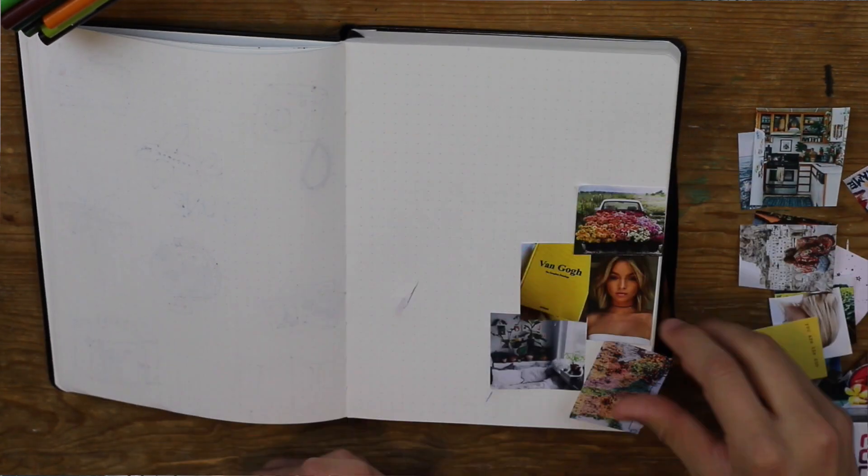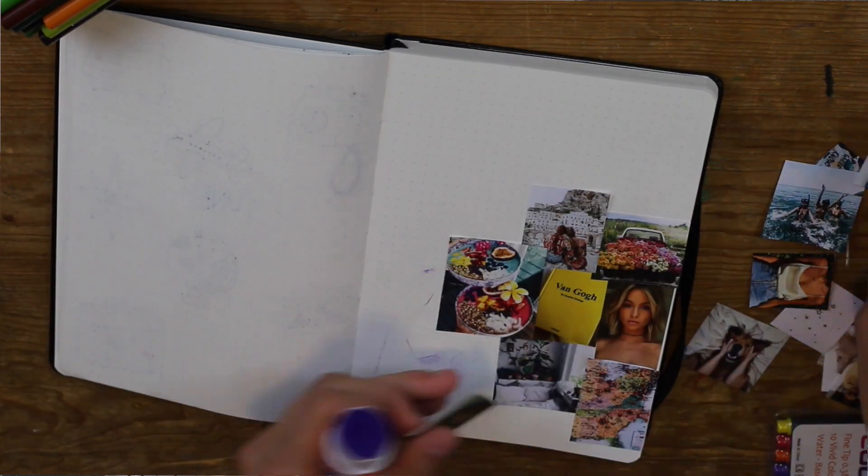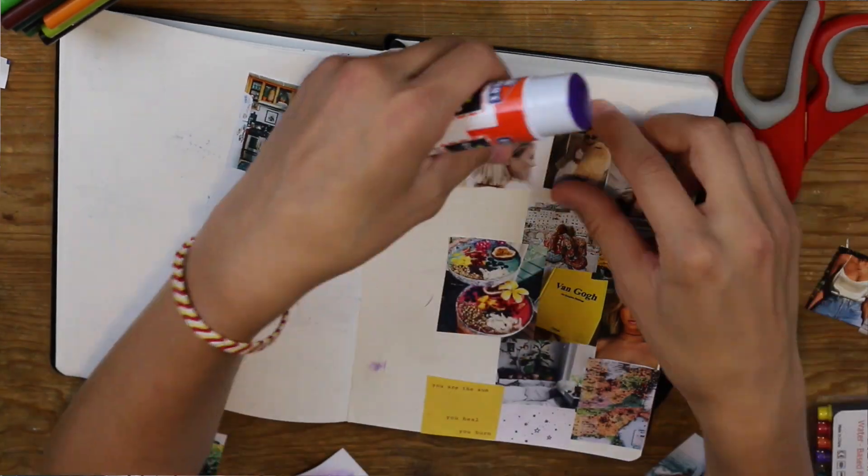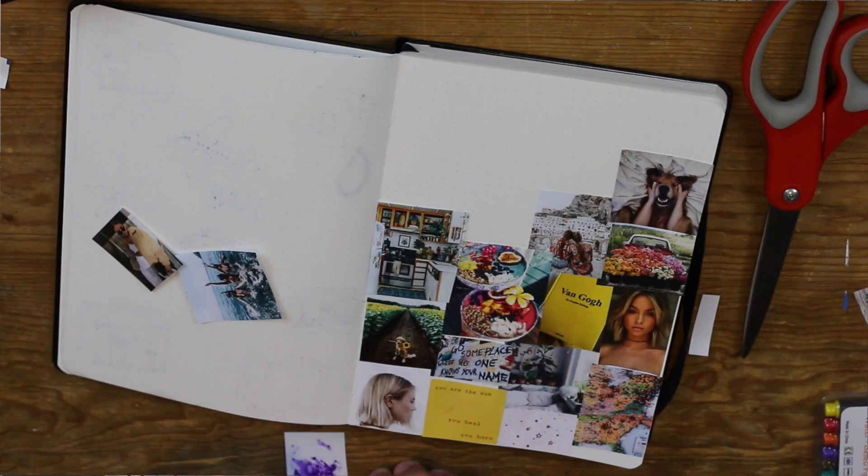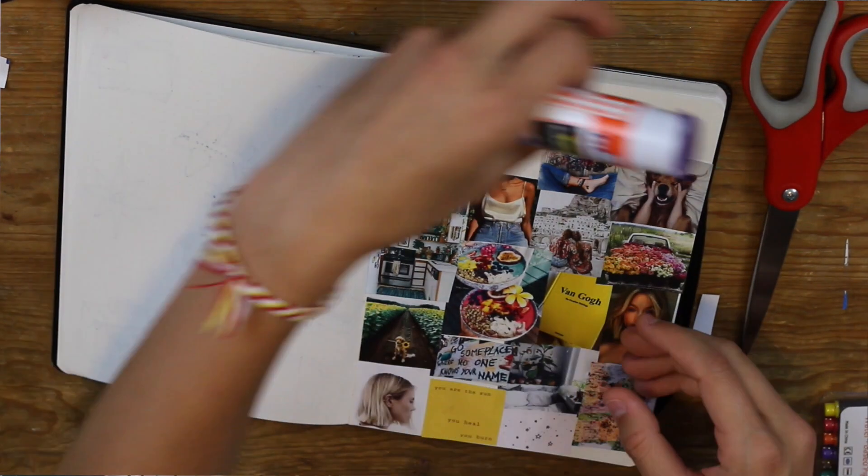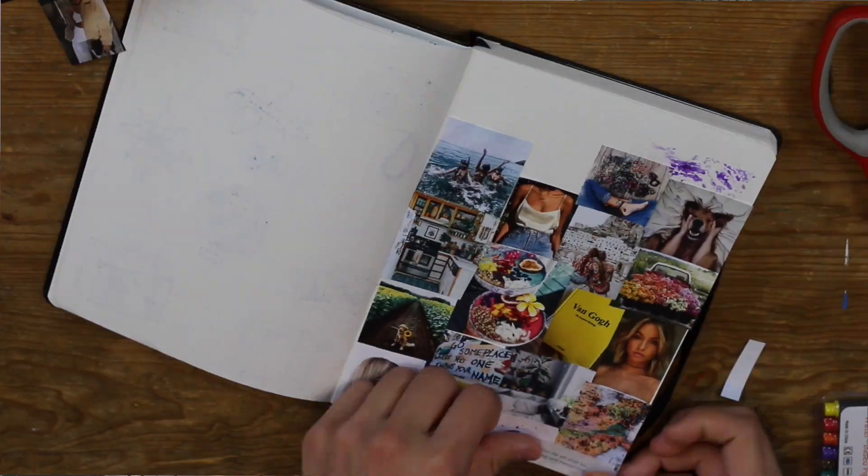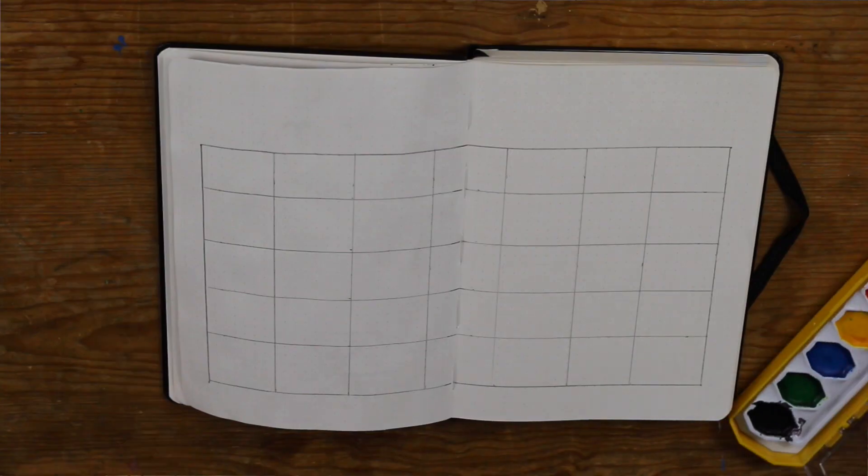This is definitely my favorite part about bullet journaling. When I start a new month, I get to do my inspiration page. I go on VSCO, Pinterest, Instagram and find my favorite pictures of clothes, food, locations, books, travel things, whatever I think are super cute, and put them together to make a super cute inspiration page. I love it.